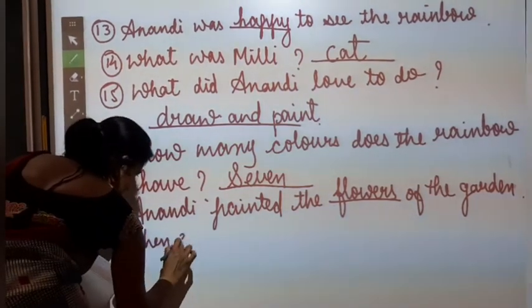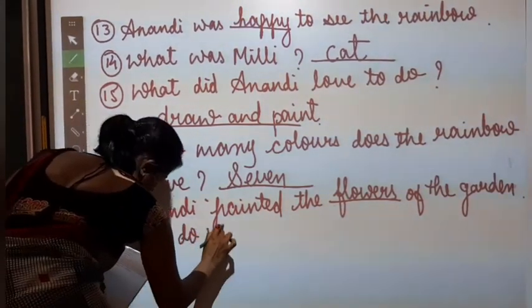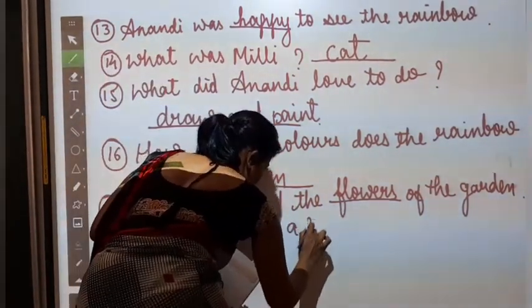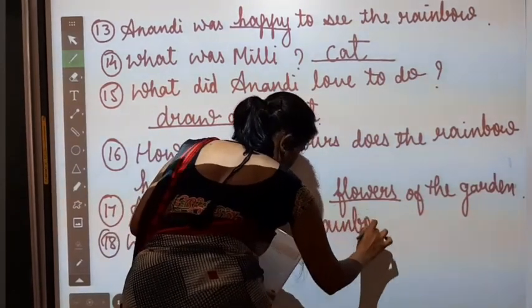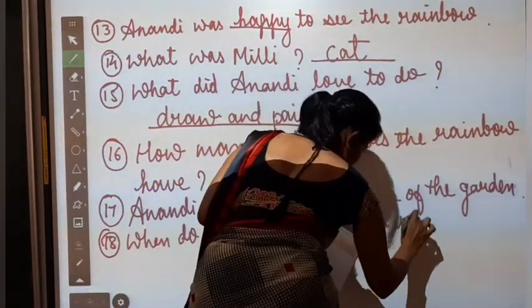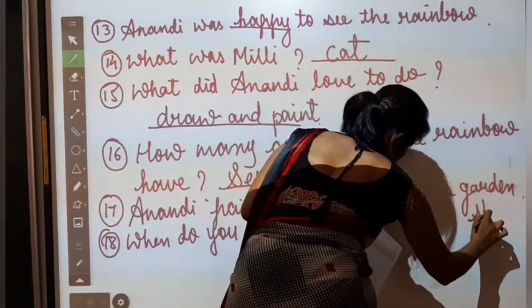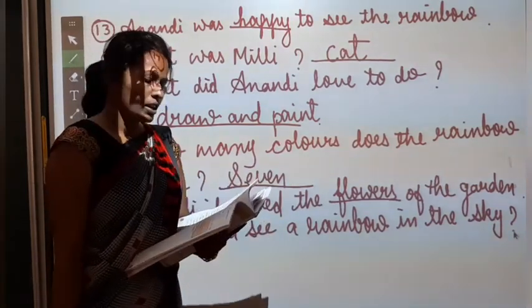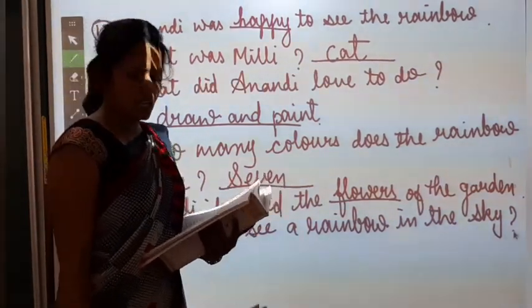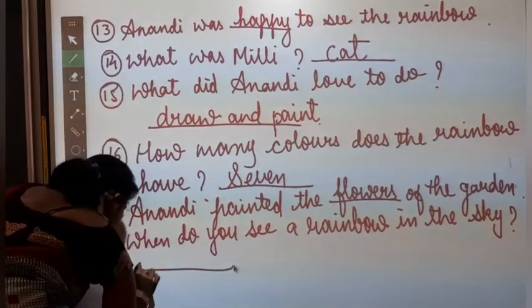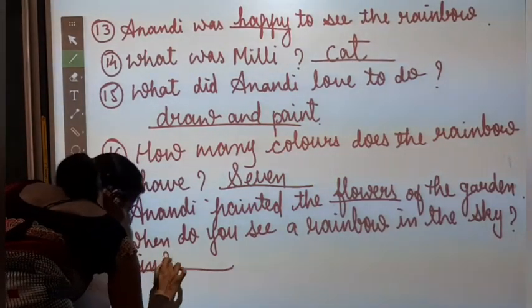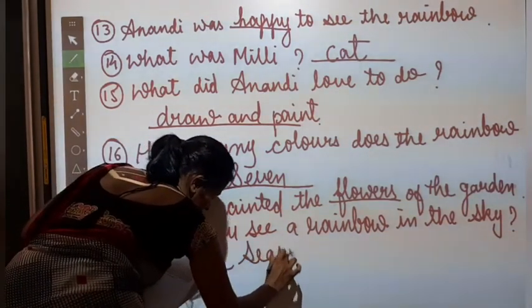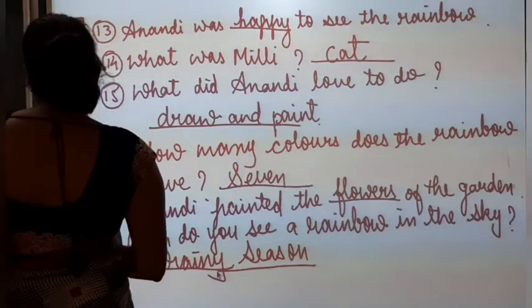Where do you see rainbow in the sky? Rainbow kab dikhta hai akash mein? In summer, or in rainy season, in winter or at night. So what will be the answer? In rainy season. Okay. Next section.